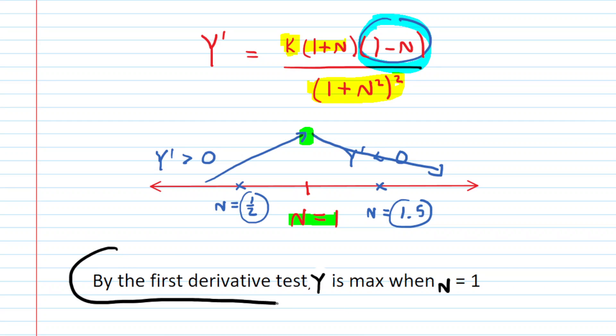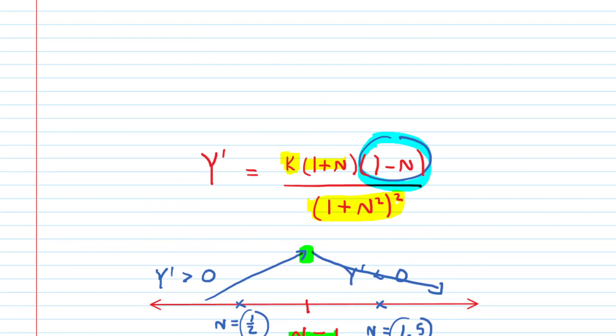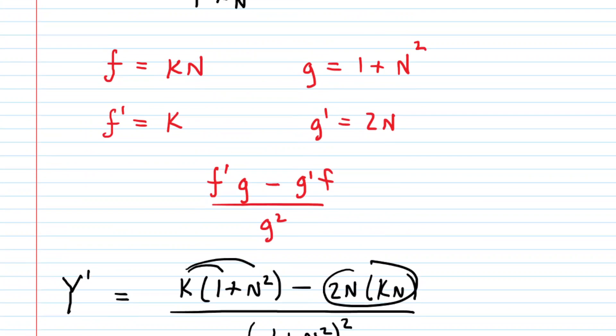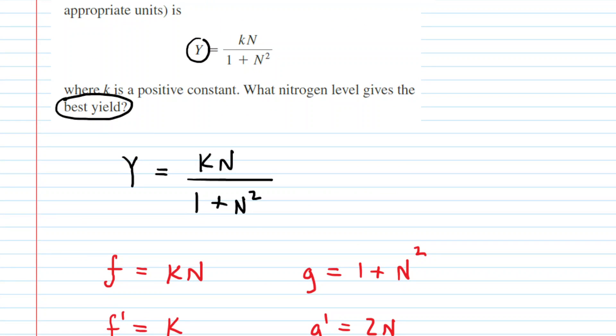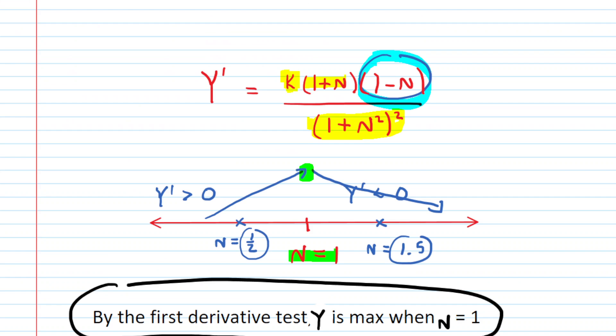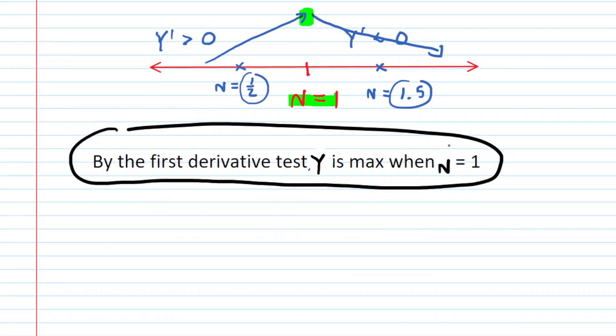That indeed is the final answer. If you had to figure out the actual yield when N equals 1, you'd have to backtrack to your yield function and plug 1 in for N. We would have k times 1 over 1 plus 1 squared. 1 squared is 1, and the bottom would be 1 plus 1, which is 2. So the maximum yield would be k over 2, for those interested. But the nitrogen level that maximizes the yield was N equals 1.